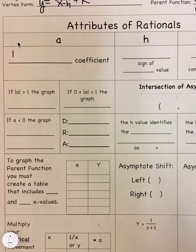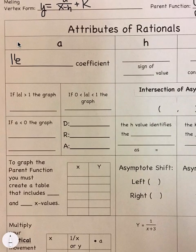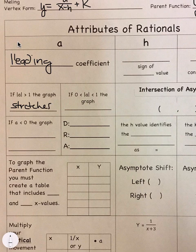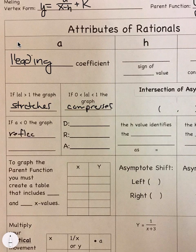A is our leading coefficient. If the absolute value of A is greater than 1, the graph stretches. And if it's between 0 and 1, it compresses. So just like before, nothing different. If the A is less than 0, the graph reflects. And instead of it reflecting across the x-axis, it reflects across the asymptote. So that's the big difference. It reflects across the asymptote.